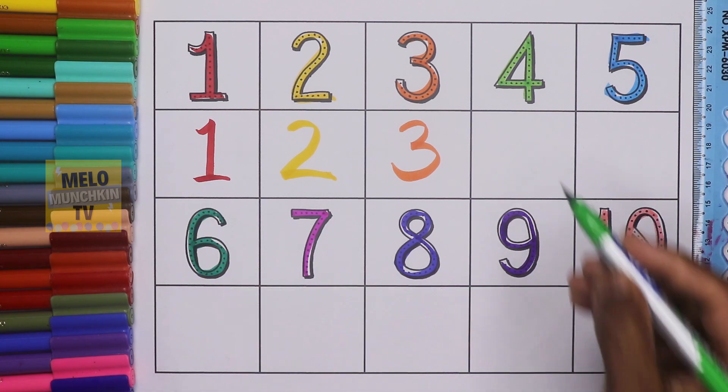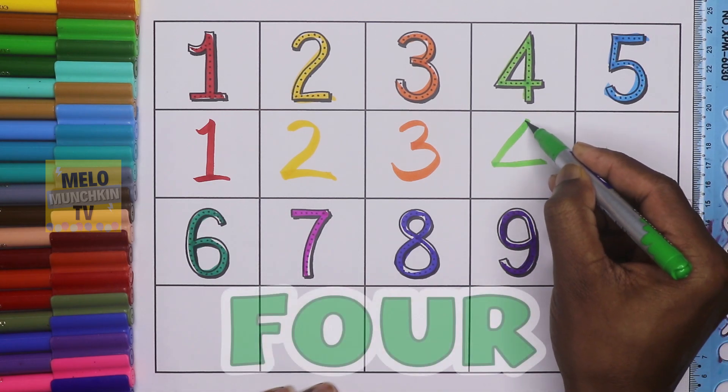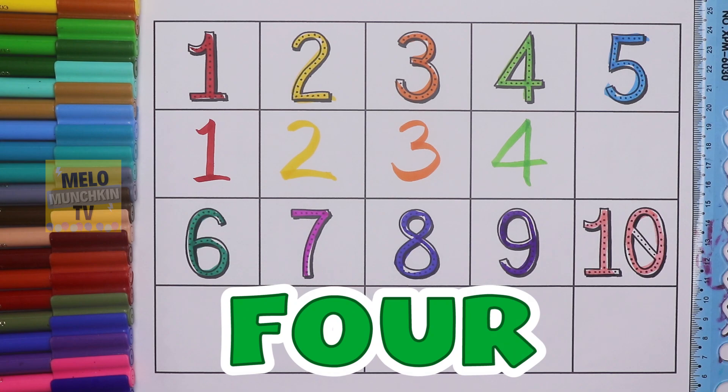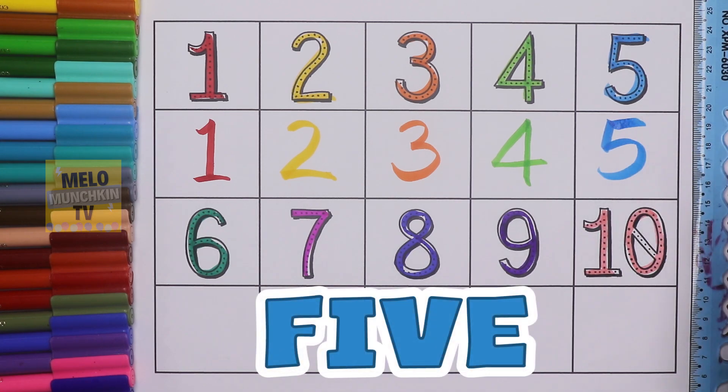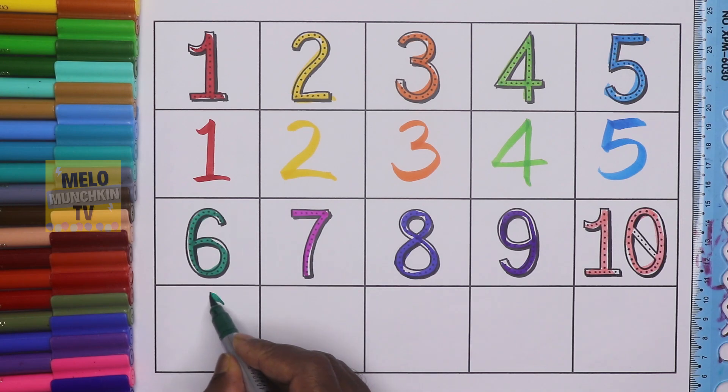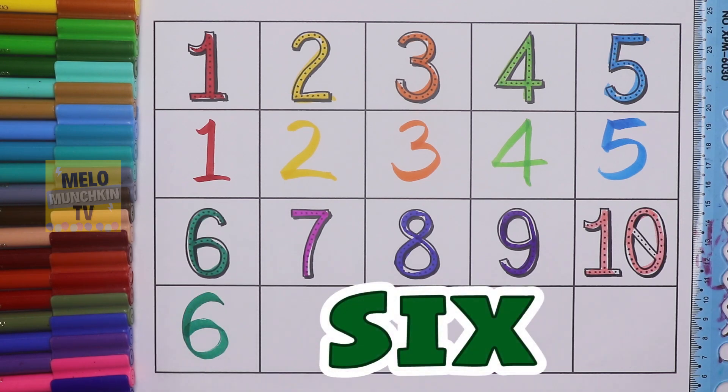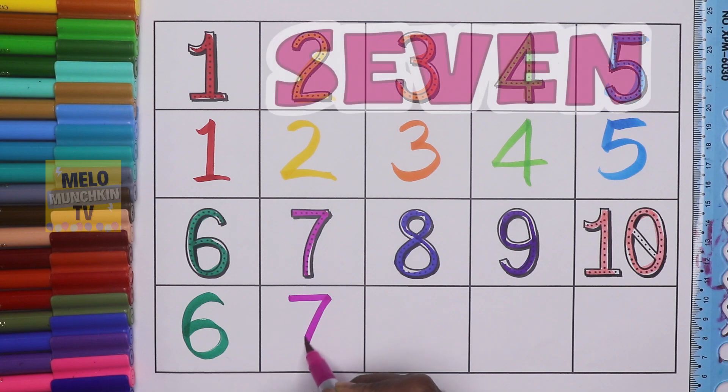This is number four: F-O-U-R, four. This is number five: F-I-V-E, five. This is number six: S-I-X, six. This is number seven: S-E-V-E-N, seven.